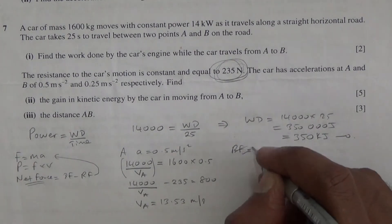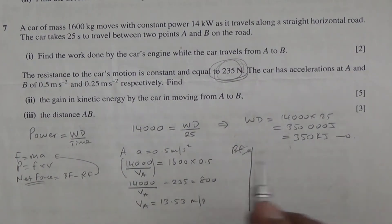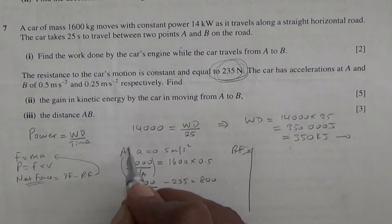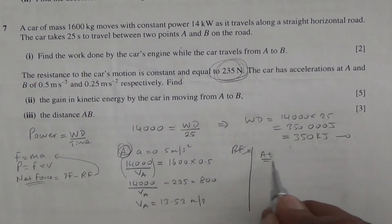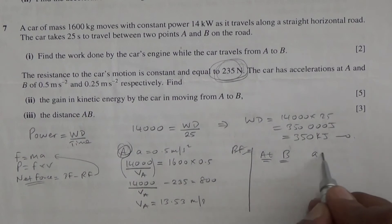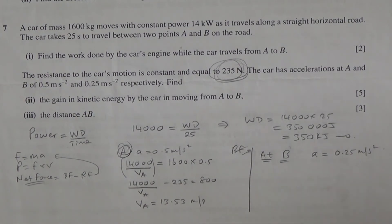Let us do the same thing for the velocity at B. What is happening at B? So this was at A, now at B. At B, the acceleration was given as 0.25 meters per second squared. So again, we're going to do the same thing. We know that power is equal to force multiplied by velocity. And the power is 14,000.